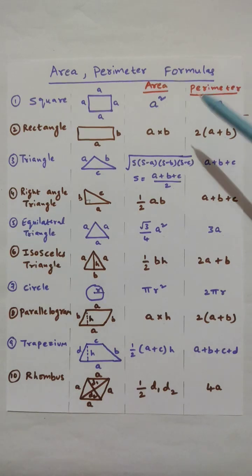Area and perimeter formulas. Area of square is A squared. Perimeter is 4 into A.